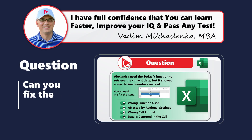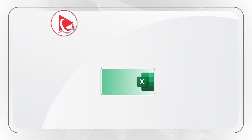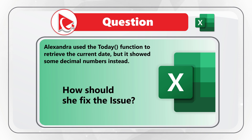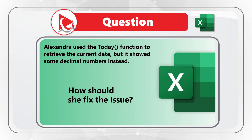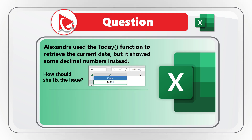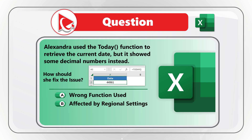Here's an amazing question which is not as easy to solve as it seems. Alexandra used the TODAY function to retrieve the current date, but it showed some decimal numbers. You're presented with a snippet from Excel showing the date and the format in cell A2, where the formula bar shows the TODAY function.